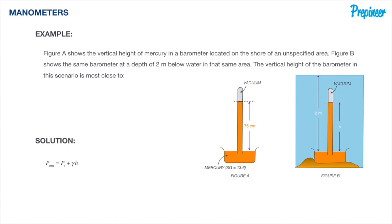So what we can do is actually pull over our general formula for a barometer, which is P atmospheric equals the vapor pressure plus the specific weight of the mercury times the height of the mercury.